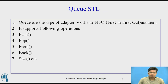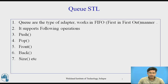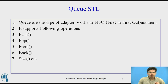Queues are a type of adapter which works in a FIFO manner, that is first in first out. It supports operations like push, pop, front, back, and size. These are inbuilt functions which we also use for the stack. In a queue, we have enqueue and dequeue operations, which are nothing but inserting and deleting elements — or pushing and popping elements into the queue. Push and pop are operations we perform on the stack, but here we'll use push and pop to perform queue operations as well.